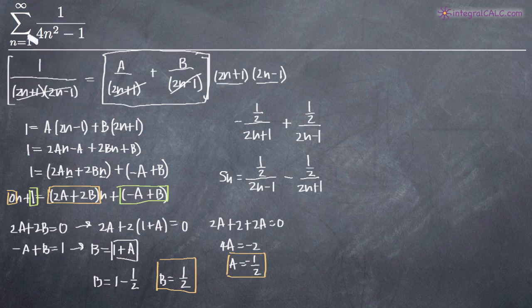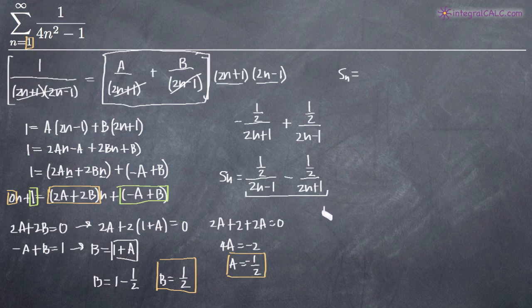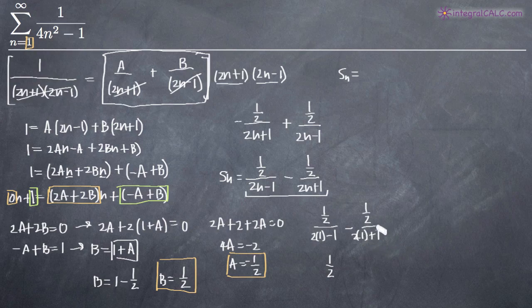We start plugging in values for n beginning at 1. Plugging in n equals 1: we get 1 half divided by (2 times 1 minus 1) minus 1 half over (2 times 1 plus 1). The first fraction gives 1 half over 1, which is 1 half. The second fraction gives 1 half over 3, which is 1 sixth. So the first term is 1 half minus 1 sixth.